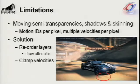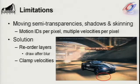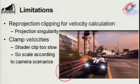There are a few limitations with this technique. To handle semi-transparent objects, shadows, and skinned animation, we would need multiple motion IDs per pixel or multiple velocities per pixel. We address semi-transparency in game — for example, by reordering layers so the flare from headlights is drawn after the motion blur effect. In other cases, we just clamp velocities according to the camera scenario. We also have an artifact on near clipping with the inverse projection math, and since it's too slow to apply per-pixel clipping in hardware, we scale according to the camera.